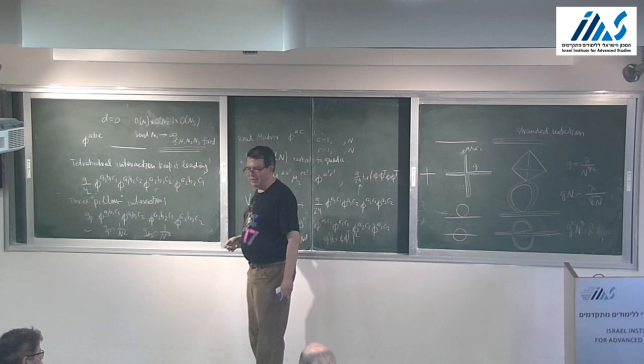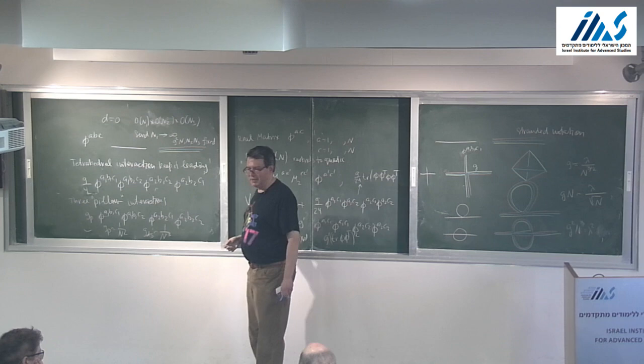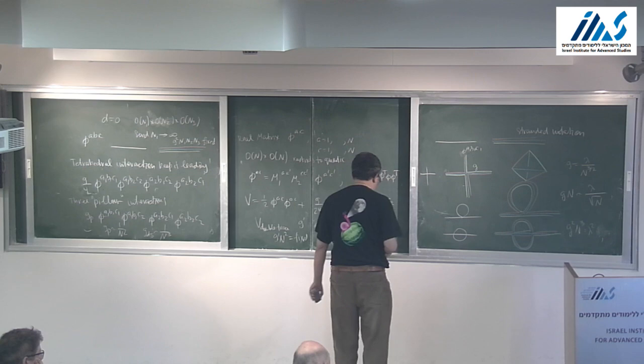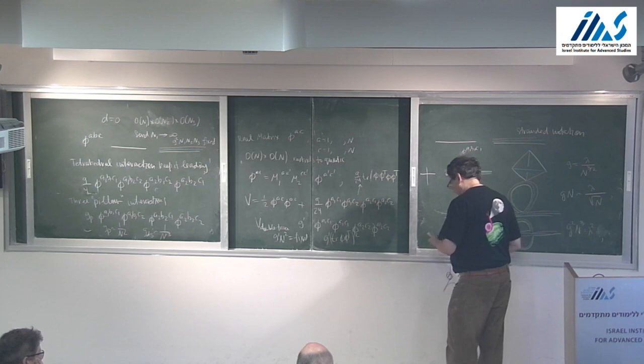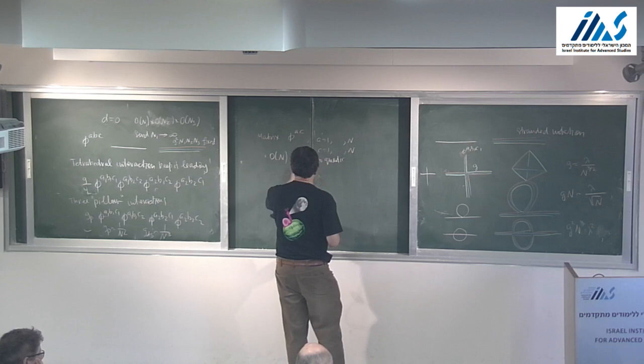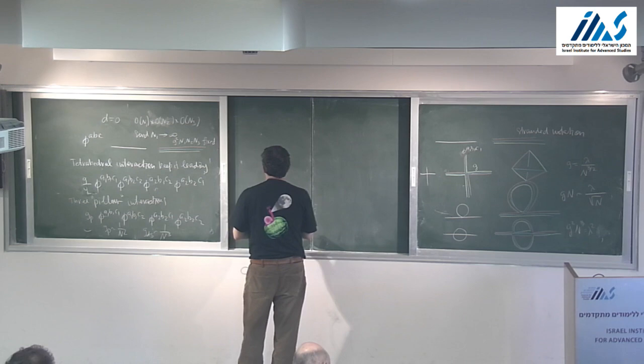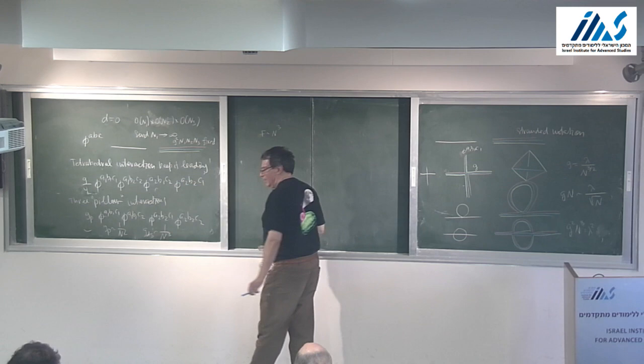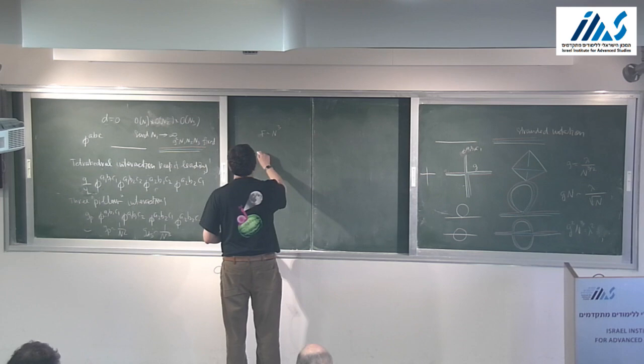One can generalize to O(N₁)×O(N₂)×O(N₃) with distinct indices, but the melonic limit requires sending all n_i to infinity simultaneously, keeping g²N₁N₂N₃ fixed — a truly new kind of limit.